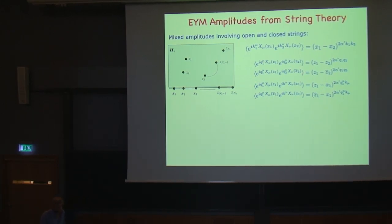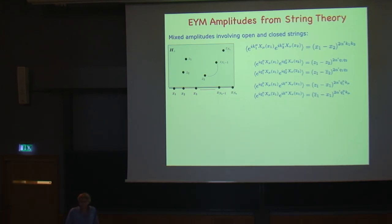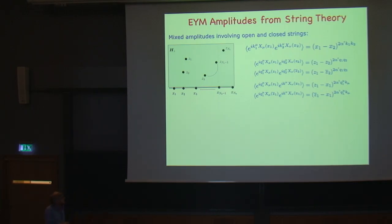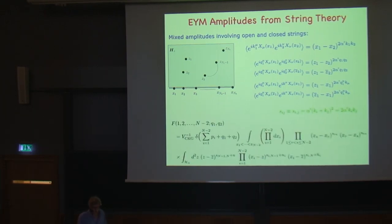For the open string, the vertex operators describe plane waves giving Koba-Nielsen-like factors. For the closed string there is a similar correlation function, but there is a key difference: if you do the whole computation on the sphere, there is a mixing between holomorphic and anti-holomorphic fields for the closed string positions. This mixing is simply due to the boundary, and can also be understood via a method of images, giving an additional correlation function known in string theory as the double cover.